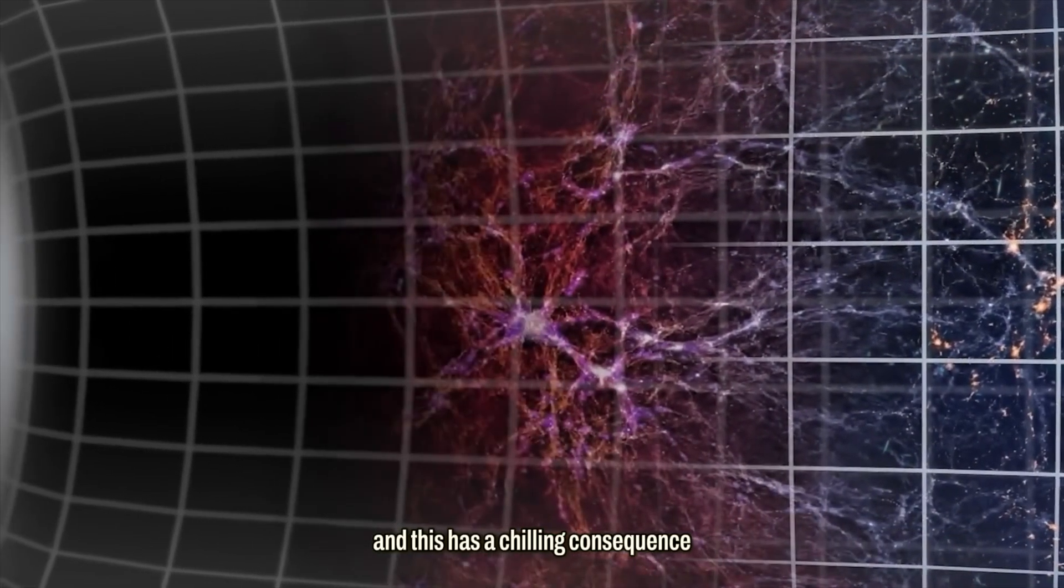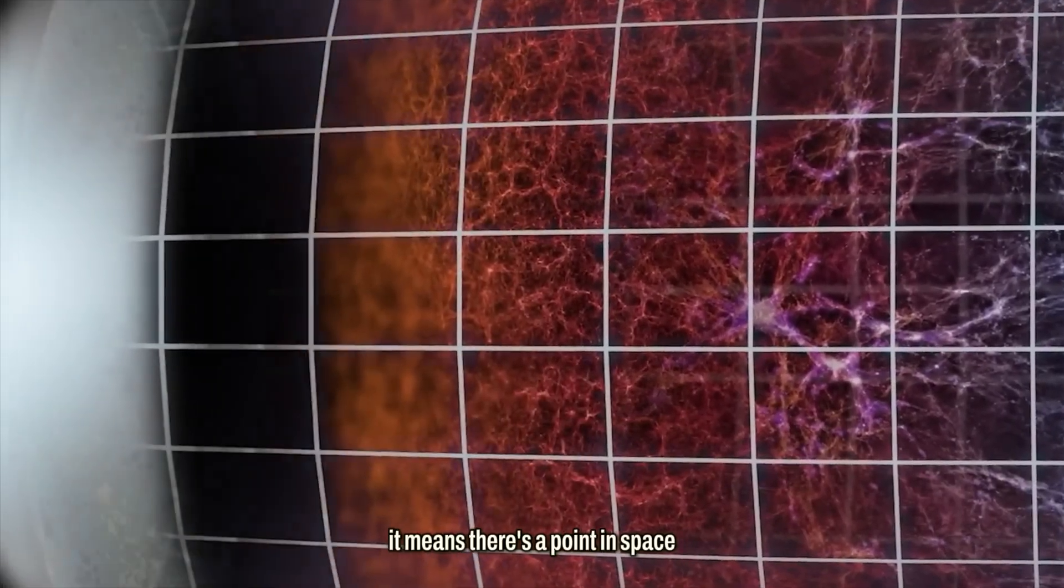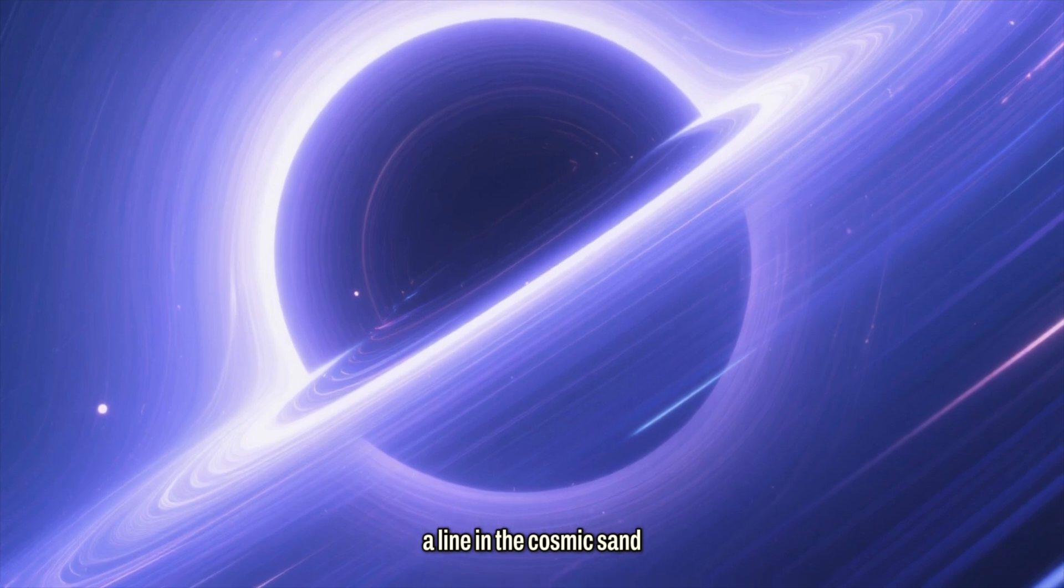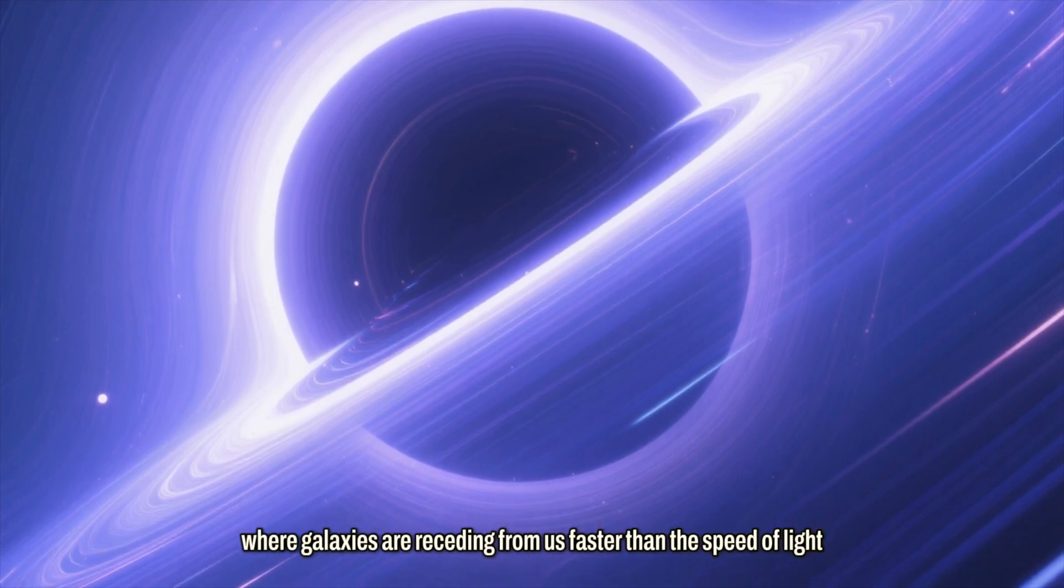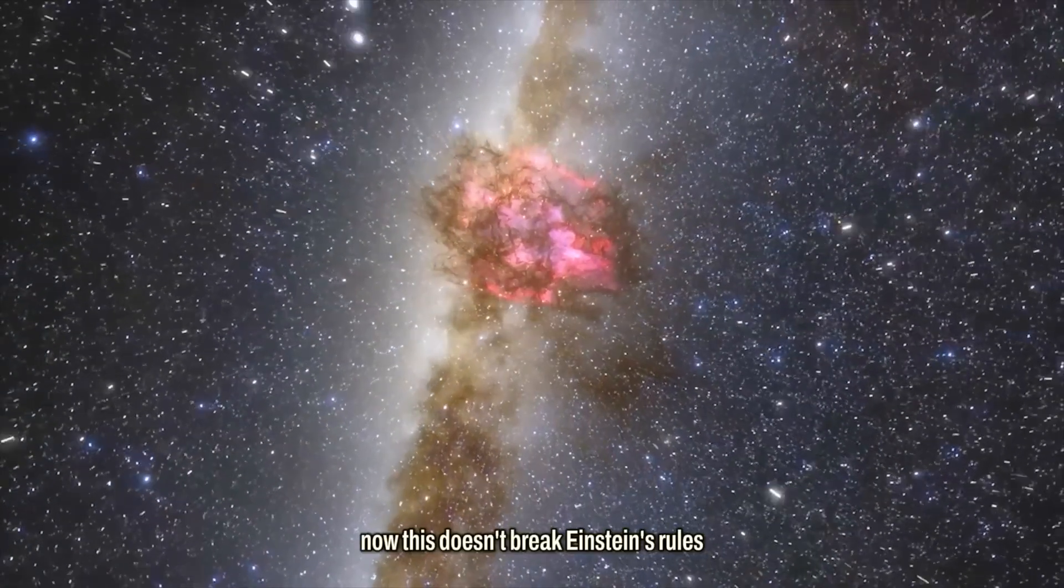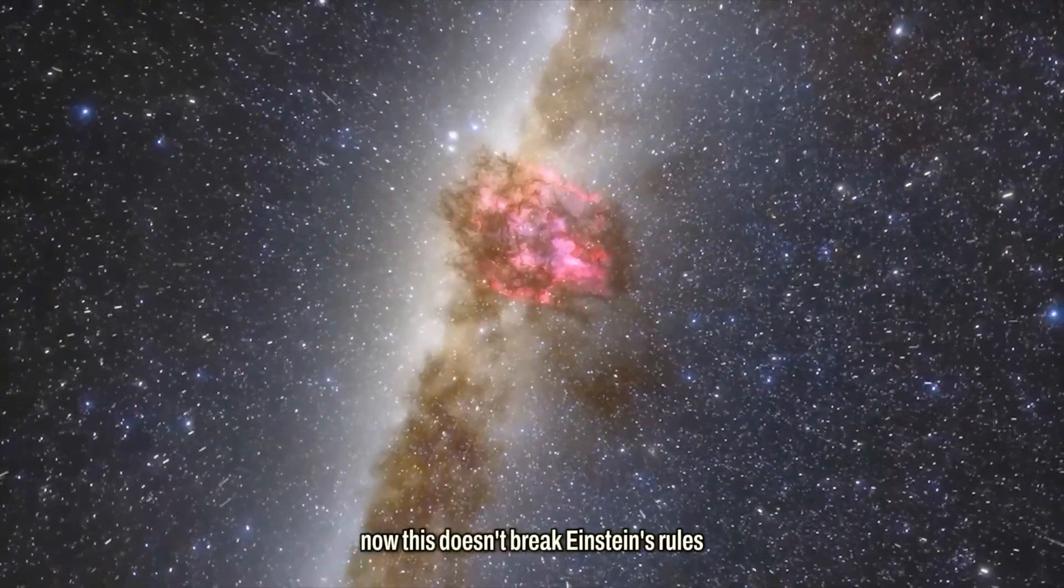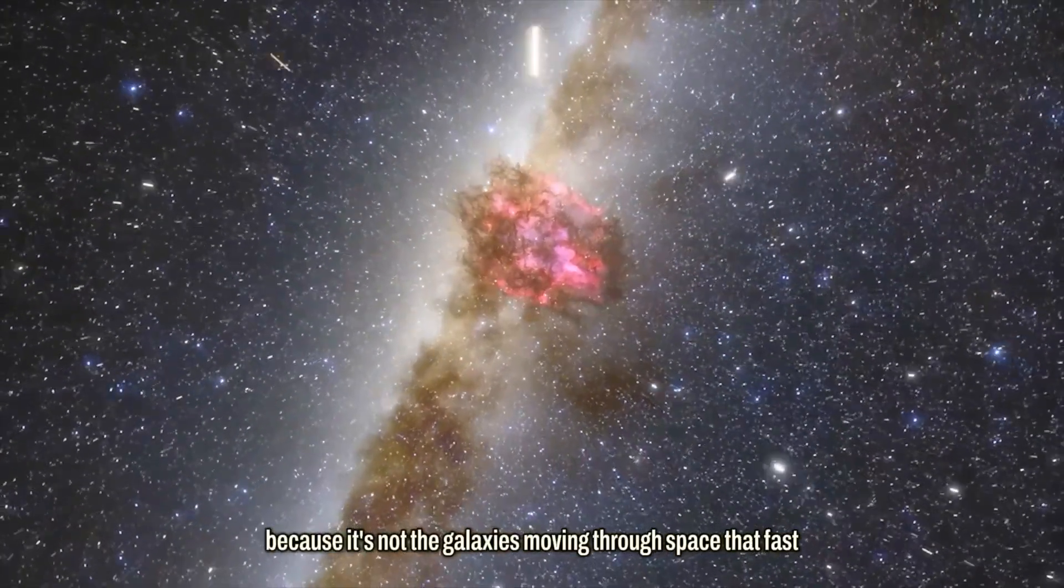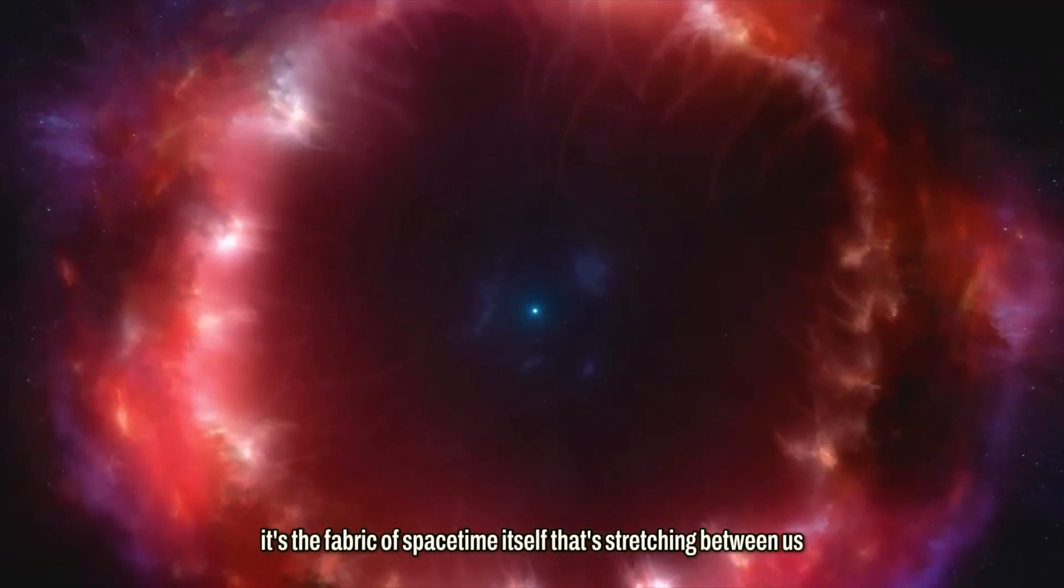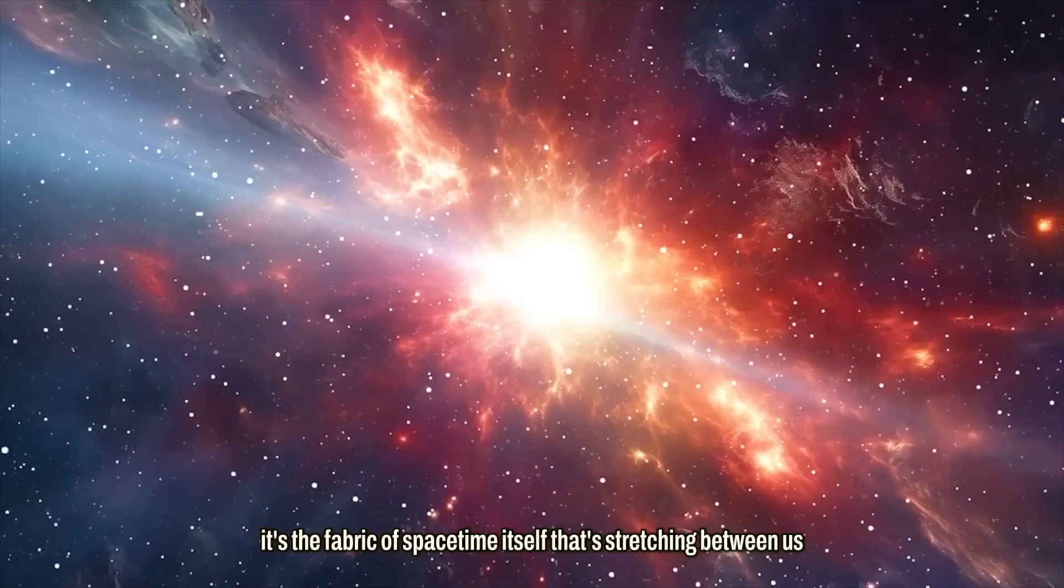And this has a chilling consequence. It means there's a point in space, a line in the cosmic sand, where galaxies are receding from us faster than the speed of light. Now, this doesn't break Einstein's rules, because it's not the galaxies moving through space that fast. It's the fabric of space-time itself that's stretching between us.